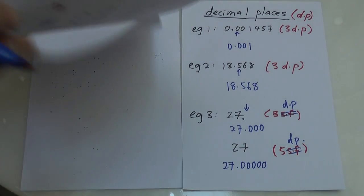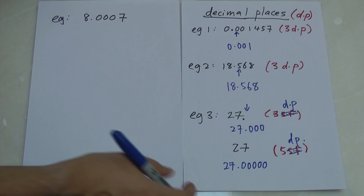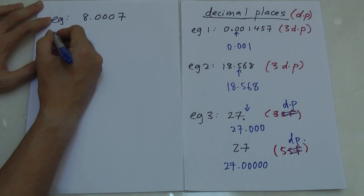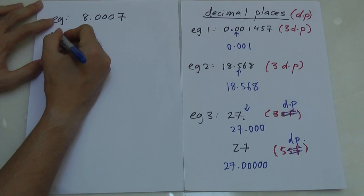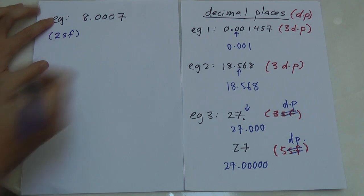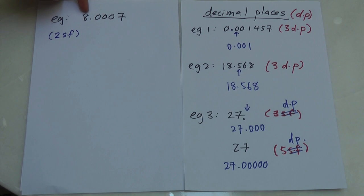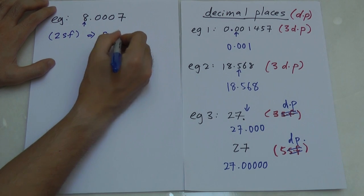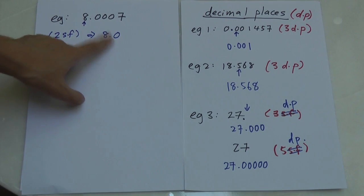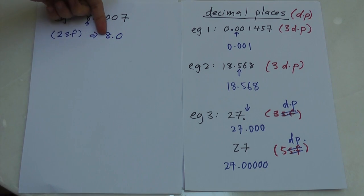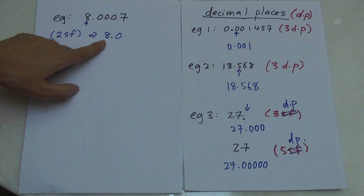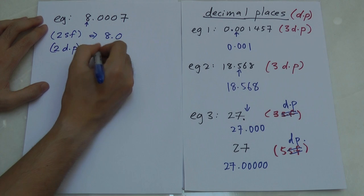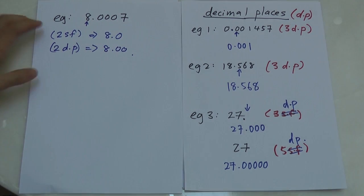Let's do a few more examples. Take a number starting with 8 — since there's a digit at the front, it's the first number we count. For two significant figures, we get 8.0 — one and two. Notice the leading zeros are never counted, but trailing zeros after the decimal are. For two decimal places, you simply get 8.00.